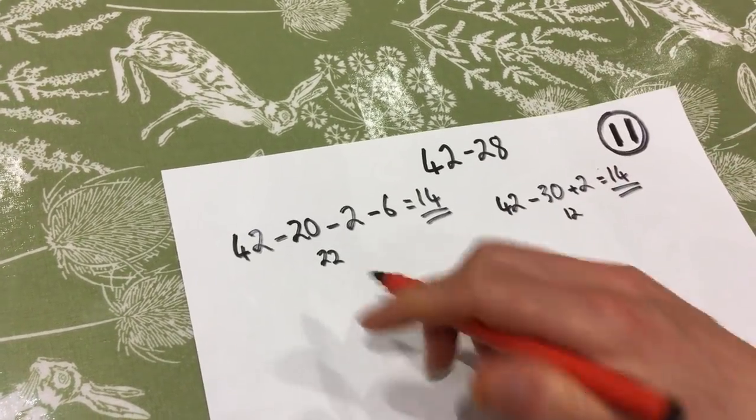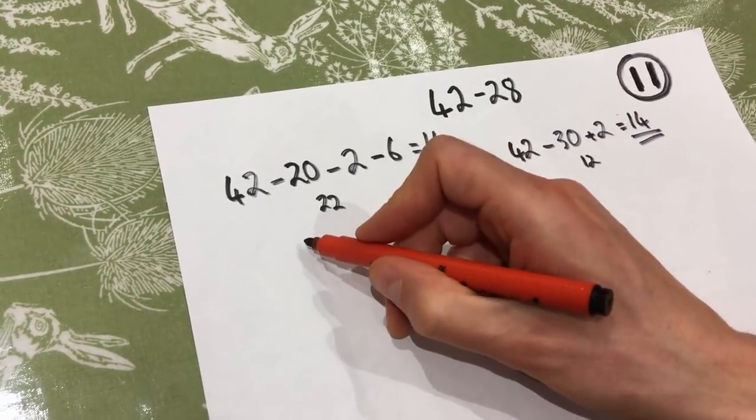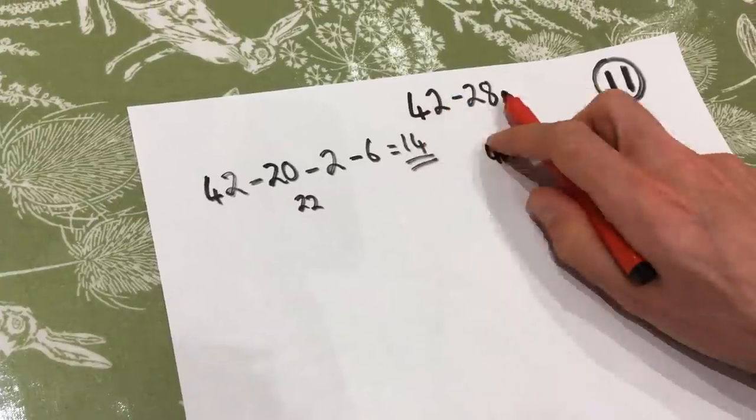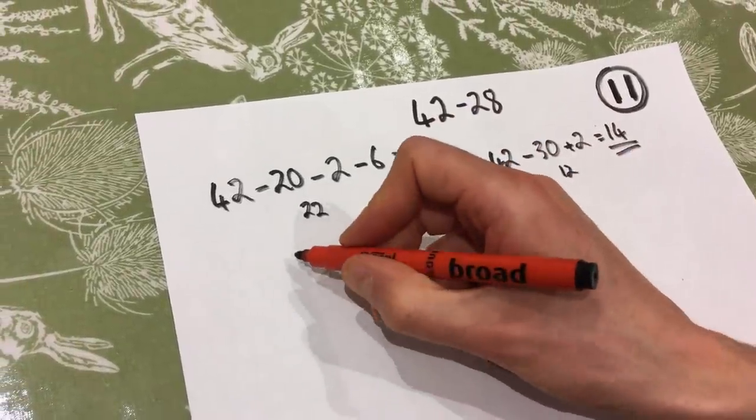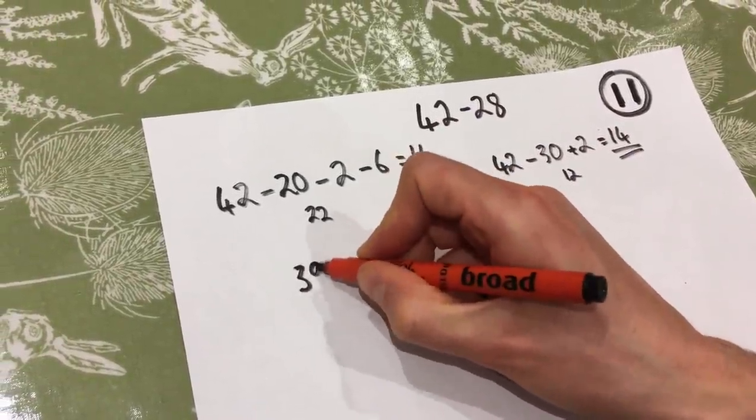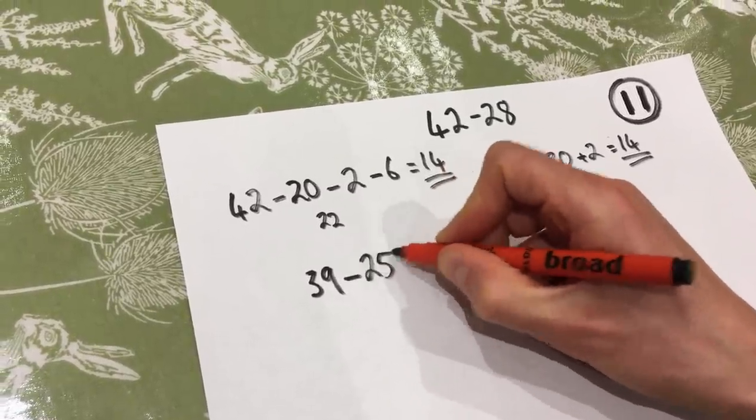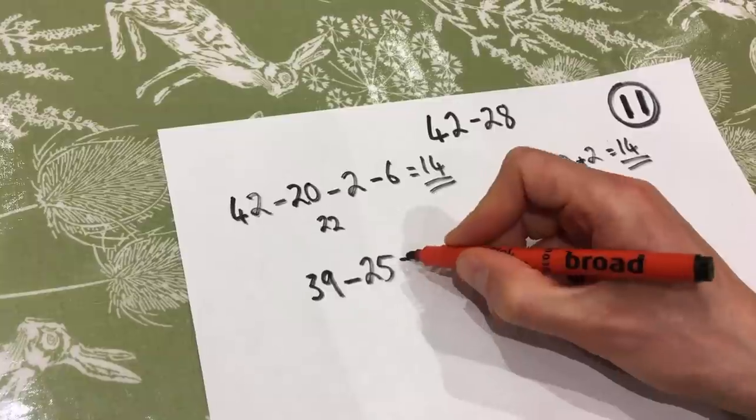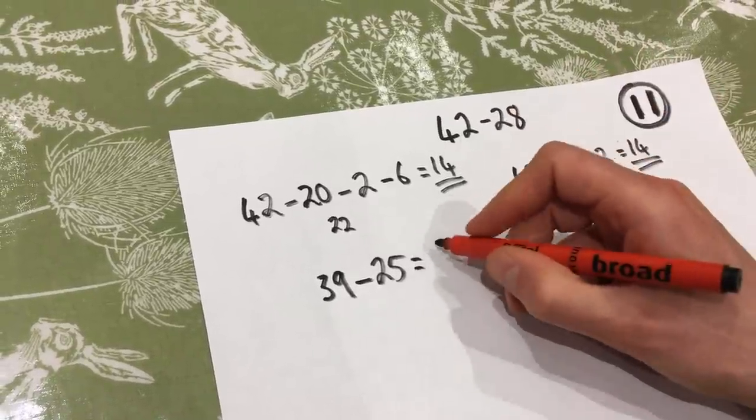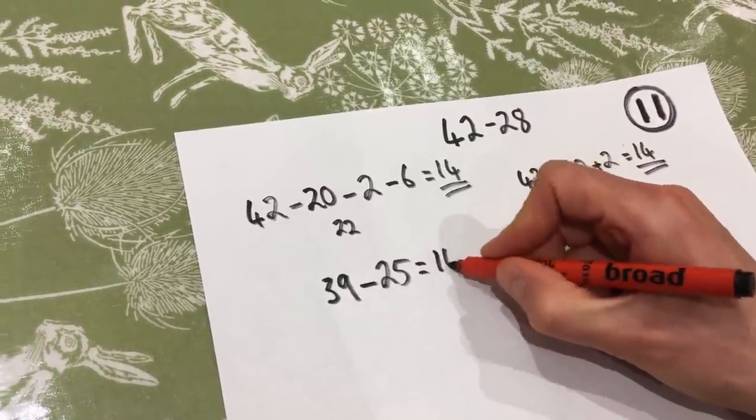A method that I didn't mention before, but we have looked at in the previous videos is subtracting the same amount from both numbers. So I could make the 42 into a 39. I've just subtracted three. So I'm going to subtract 25 instead of 28. That will give me the same answer as 42 subtract 28, which will be 14.